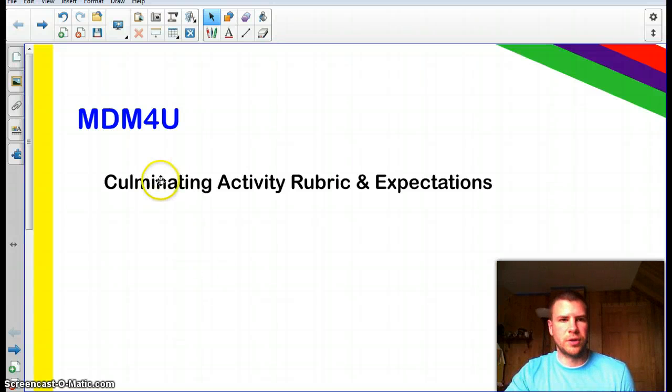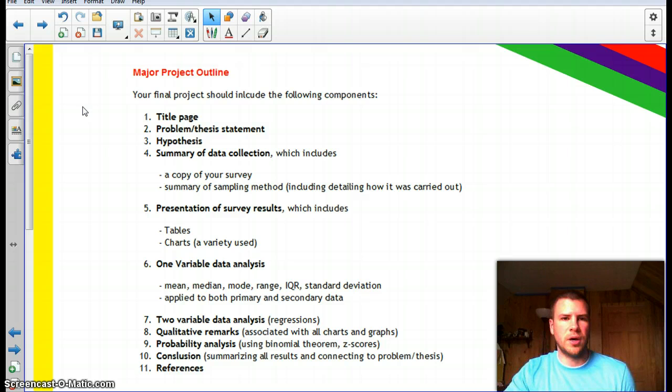This is an overview of your culminating activity, your major project, rubric and expectations. You will find the rubric and this outline in the content section. However, it's important to go over what is necessary to be included. These are not necessarily titles you need in your project, but these are components that will be assessed in one way or another throughout.